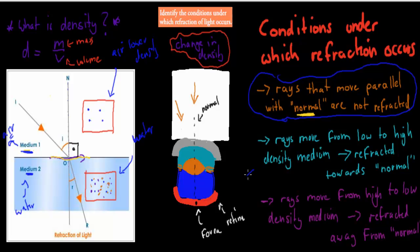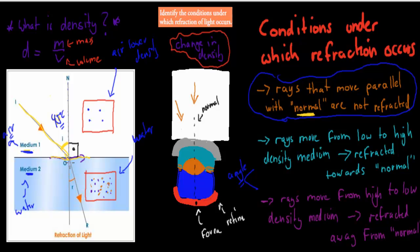When refraction does happen is if there's an angle — if there's an angle and there's a change in density, then there will be some refraction. You can see a light ray coming in at an angle, and this angle is different than 90 degrees — it might be 45 degrees. Because there's an angle, there's going to be some refraction happening. You can see it was going one way beforehand, and then it changed — it didn't go straight, it got bent, it got refracted.